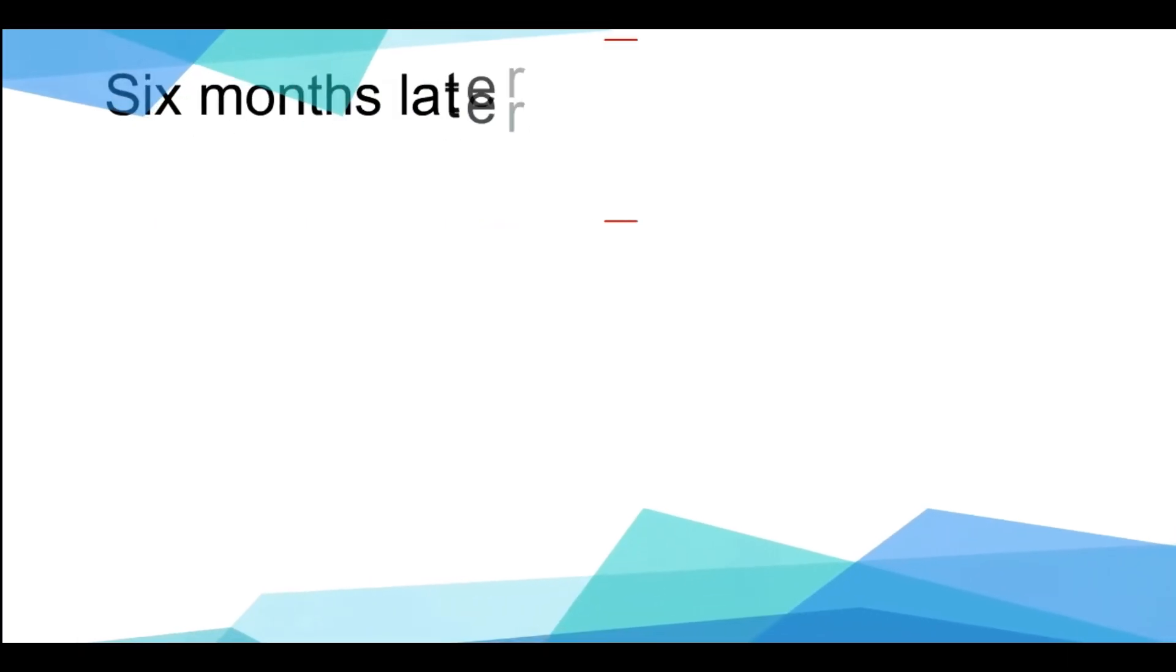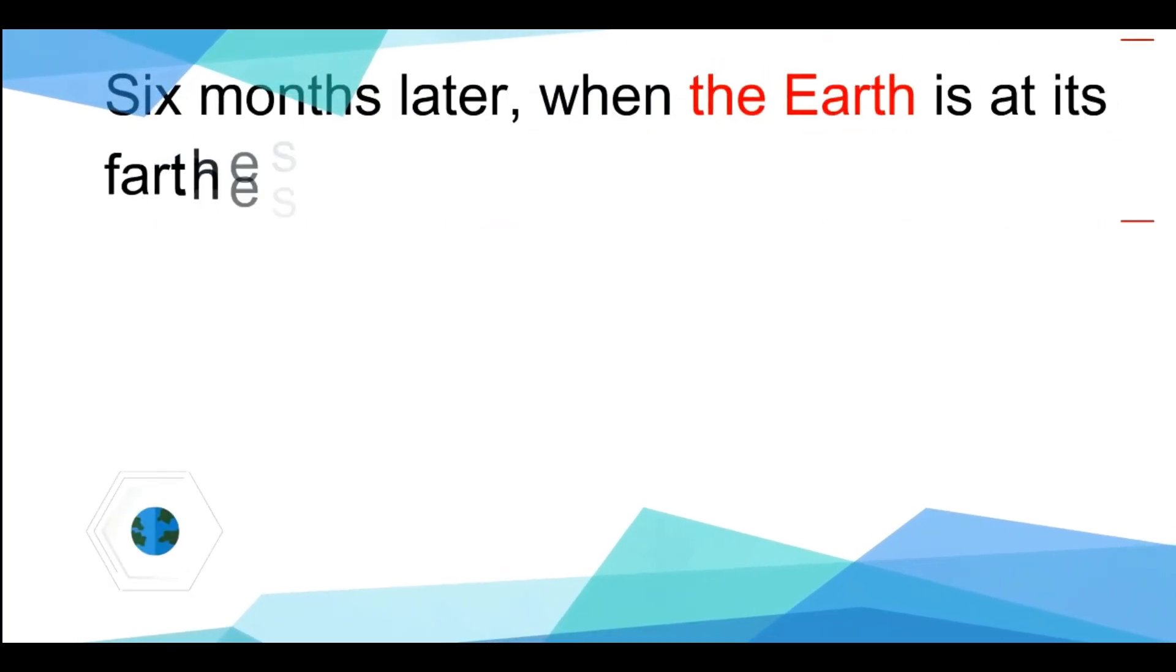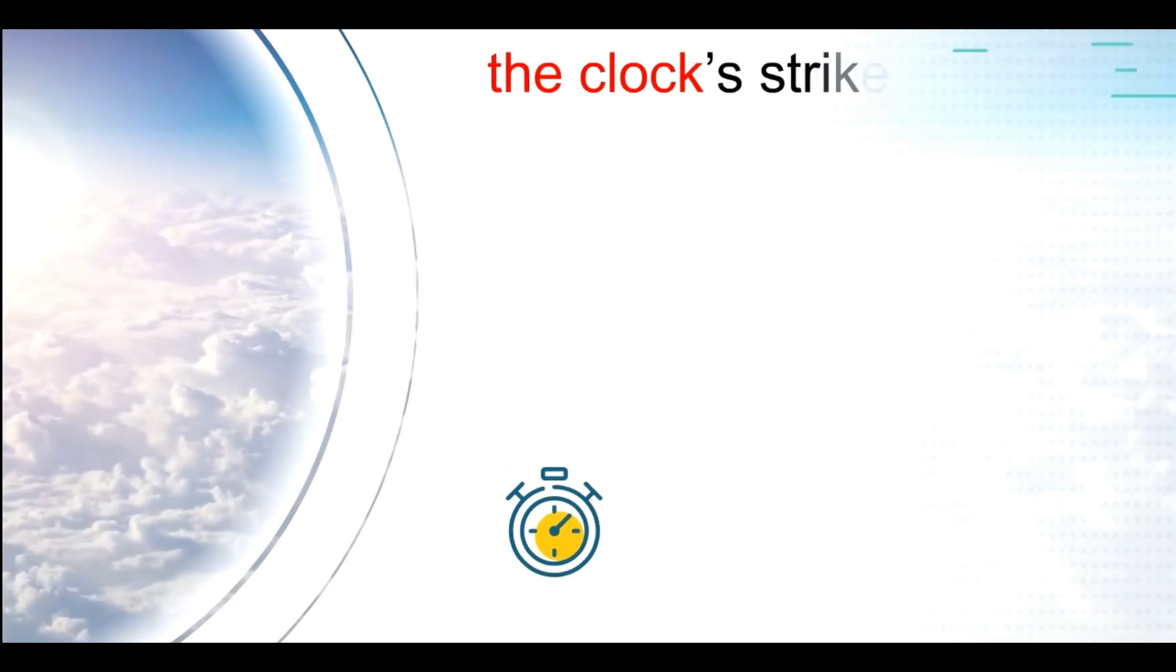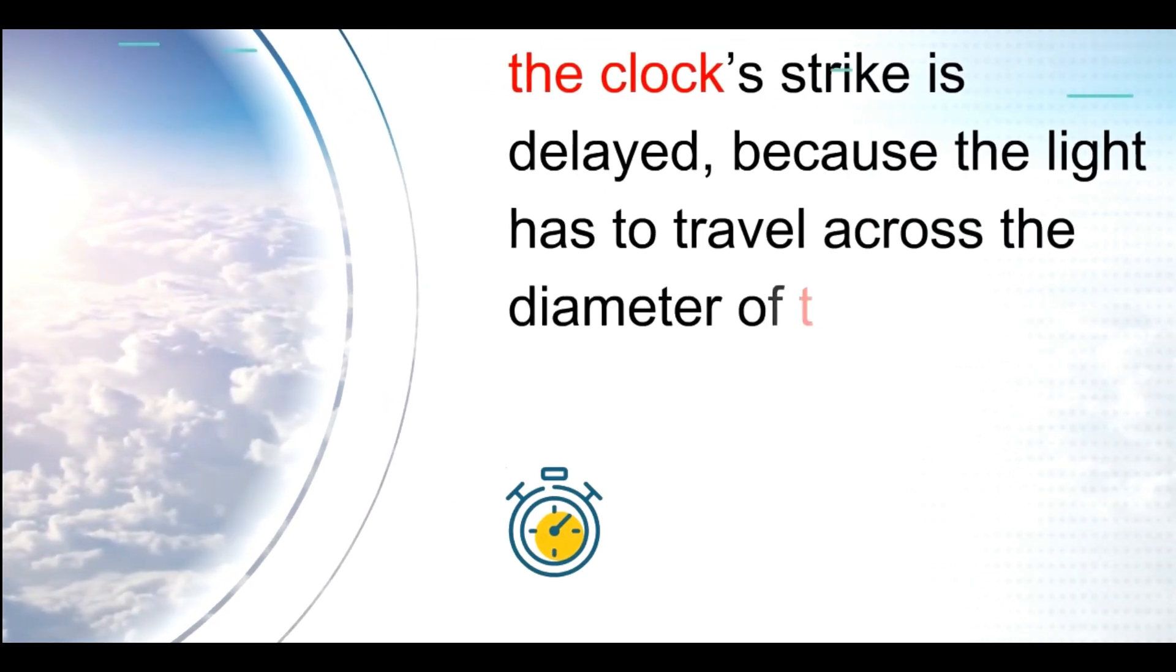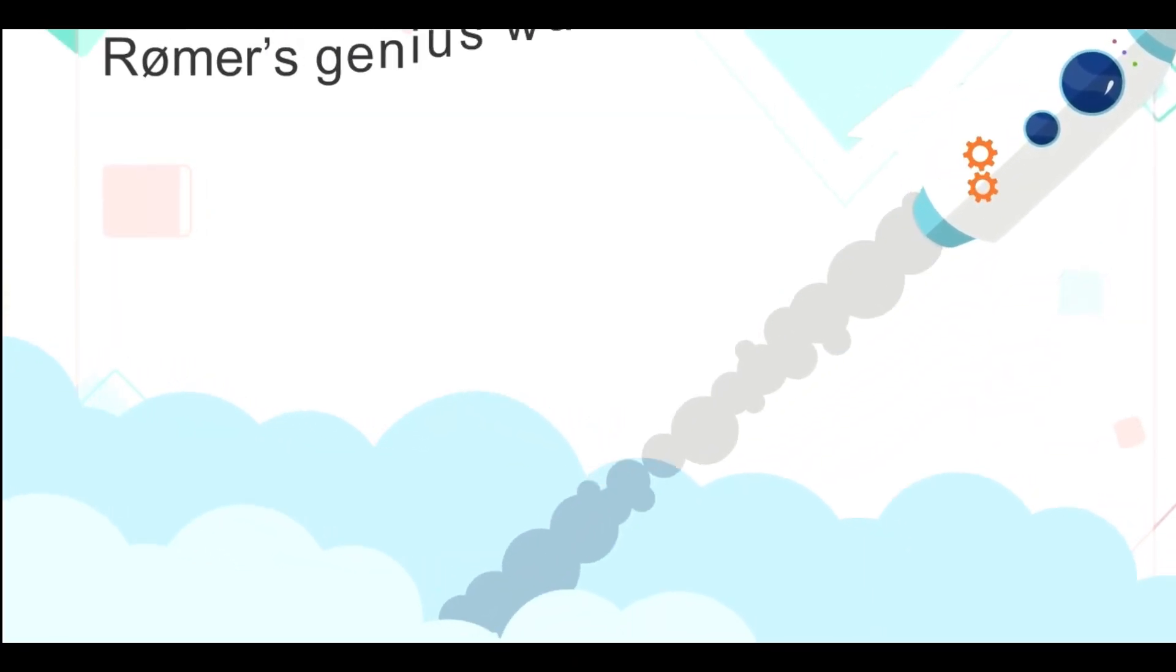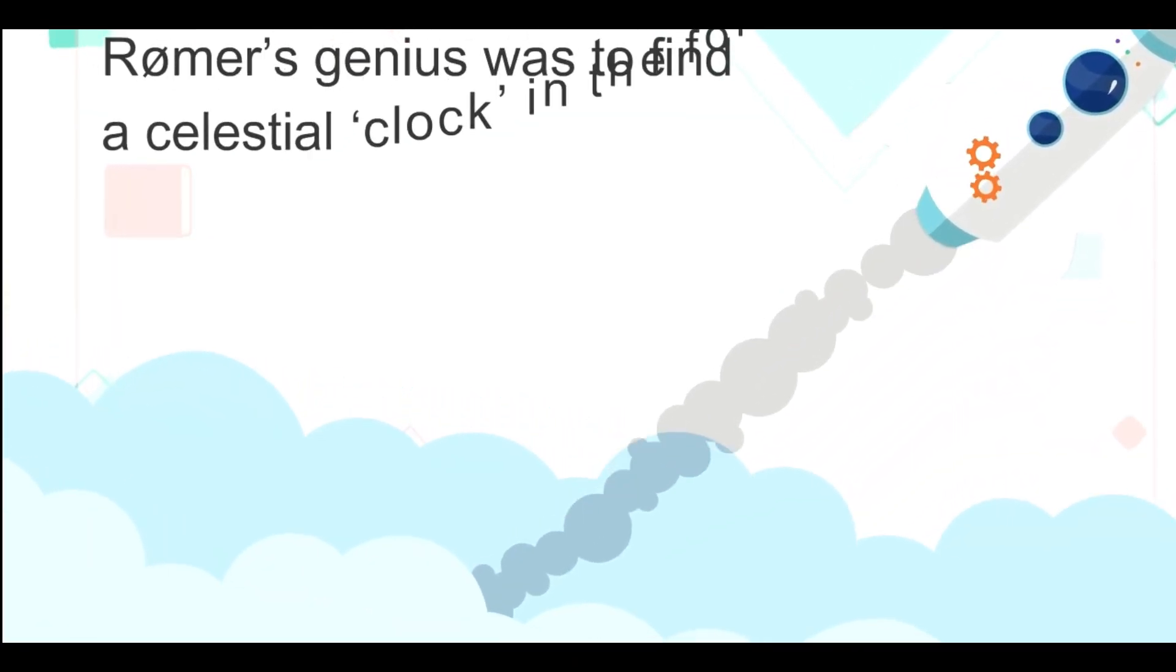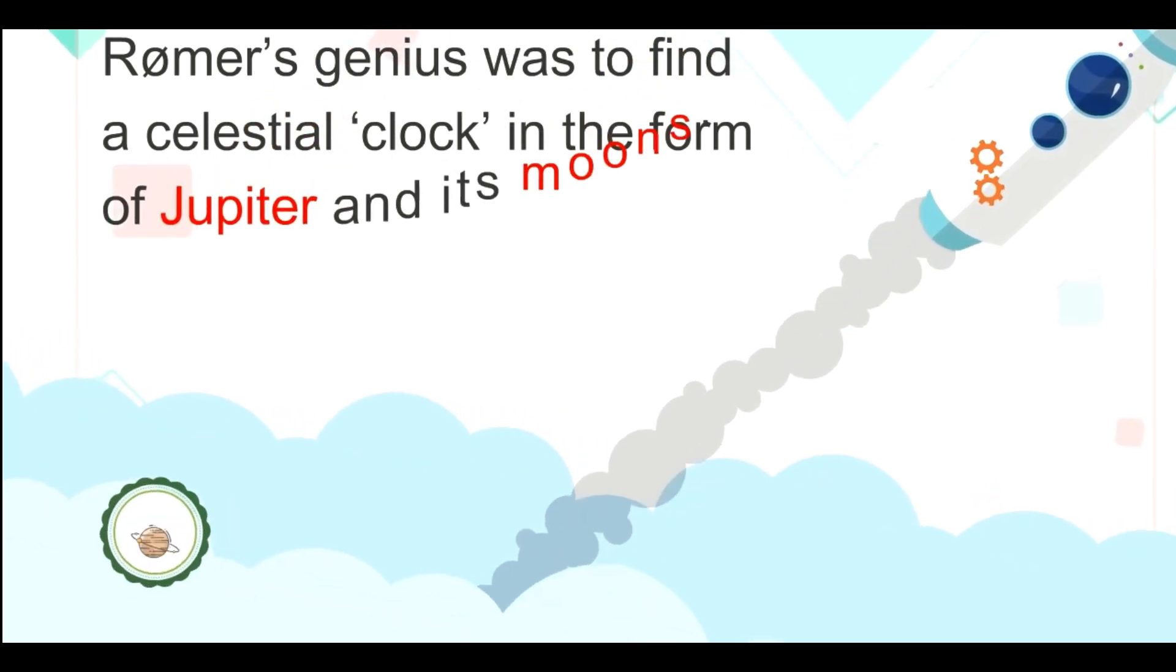Six months later, when the Earth is at its farthest, the clock's strike is delayed because the light has to travel across the diameter of the Earth's orbit. Ola Römer's genius was to find a celestial clock in the form of Jupiter and its moons.